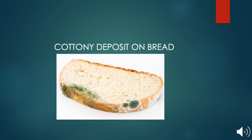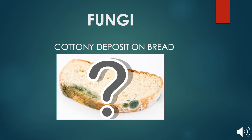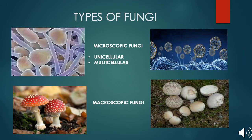Have you ever noticed a cottony growth on a stale slice of bread? It happens with many food items when they are left open in moisture. What exactly is this cottony substance? Well, this cottony growth is nothing other than live cells — living cells. These organisms are fungi (singular: fungus). These are organisms that lack chlorophyll and follow a heterotrophic mode of nutrition.